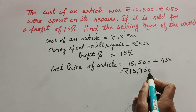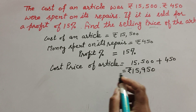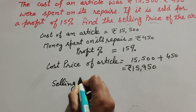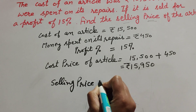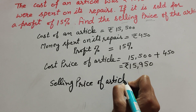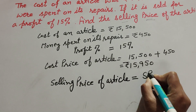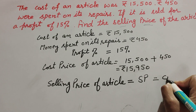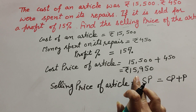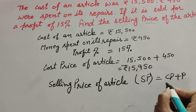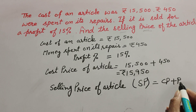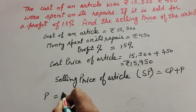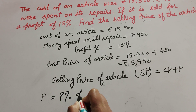So the cost price of the article is Rs 15,950. Now we find the selling price. The formula is: Selling Price = Cost Price + Profit. We are given profit percentage, not profit directly, so first we find profit, which equals profit percentage of cost price.